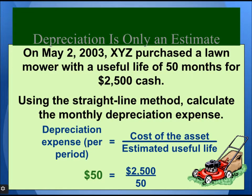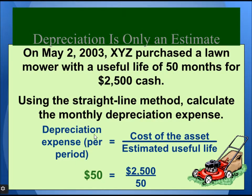Depreciation is only an estimate. On May 2, 2003, XYZ purchased a lawnmower with a useful life of 50 months for $2,500 cash, using the straight-line depreciation method. To calculate monthly depreciation expense using straight-line, divide the cost of the asset by the estimated useful life: $2,500 divided by 50 months equals $50. So the depreciation expense per period is $50 per month.